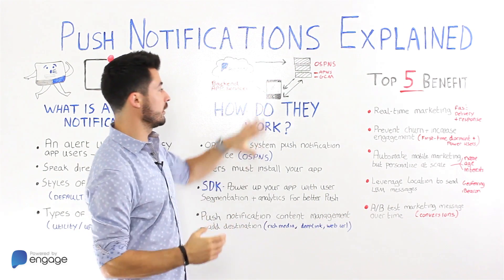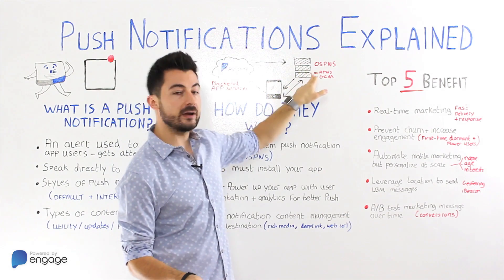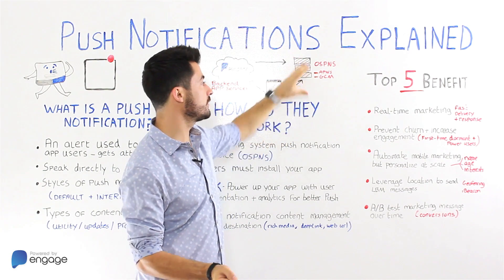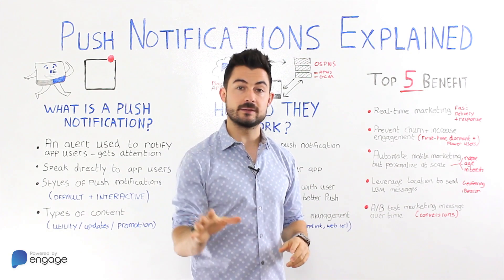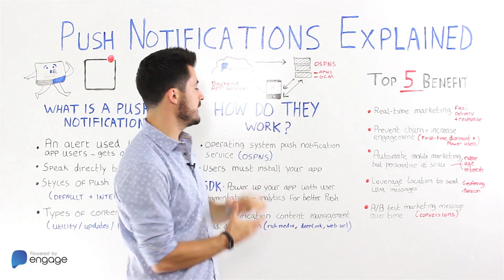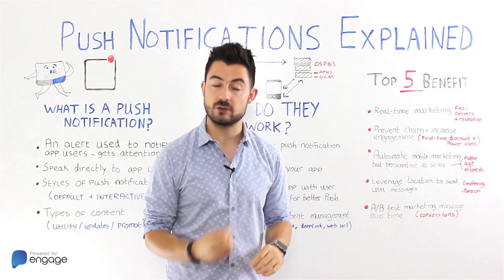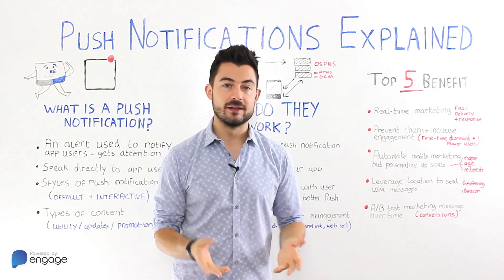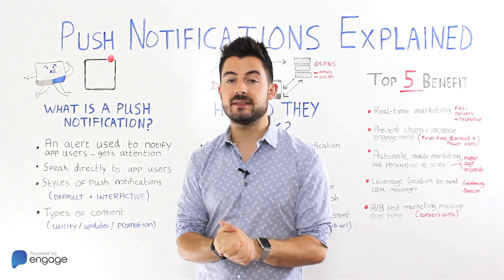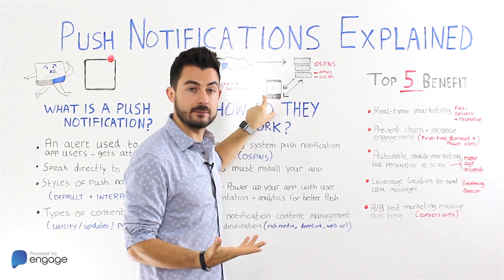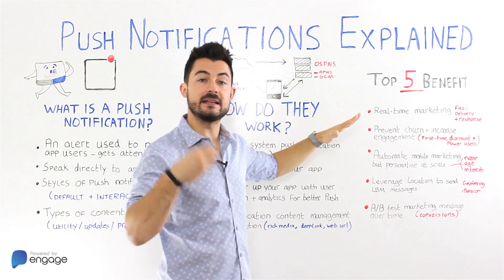So how do push notifications actually work? First, there are the various operating system push notification services — OS PNS servers — that do the job of connecting to smartphones and sending those push notifications. You also need the user to install your app; you can't blast people. They need to have the app installed and also need to opt in. When that permissions screen pops up and they say yes, it releases a device token to the operating system, which the OS PNS uses to broadcast that notification to the phone.